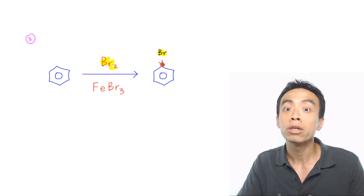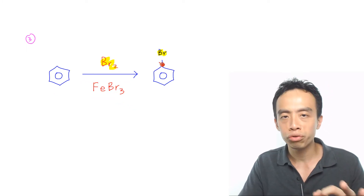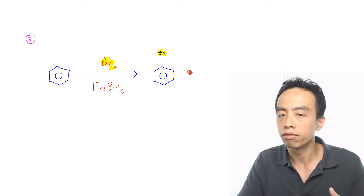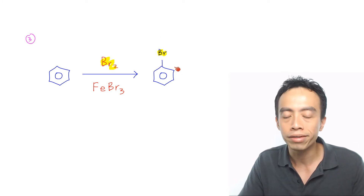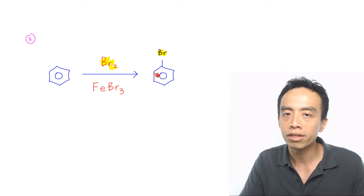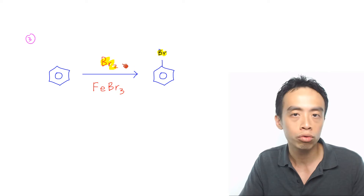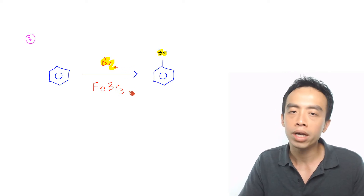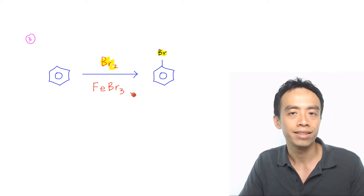Must-know reaction number 3 of benzene is the bromination of benzene to form bromobenzene. This is done using Br2 bromine with FeBr3 as catalyst.